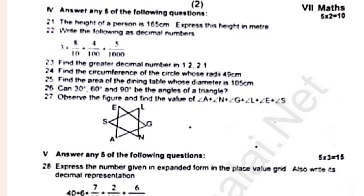Find the circumference of the circle with radius 48 cm. Find the area of the dining table with diameter 1.5 cm. You can also create angles of 30, 60, and 90 degrees for the triangle.